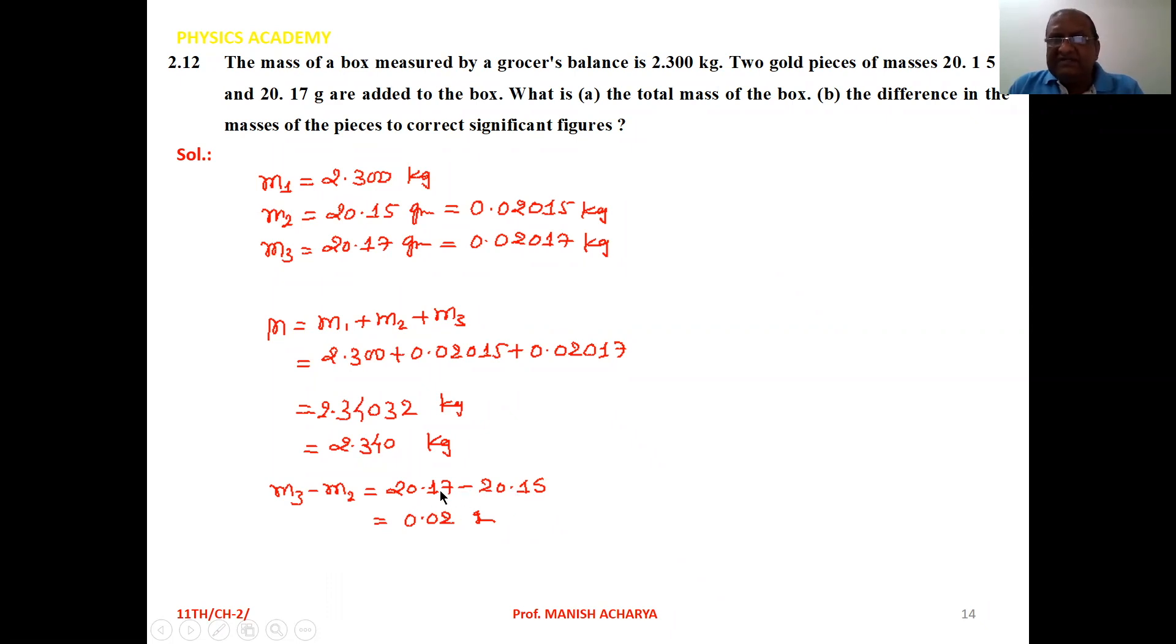Here after the decimal point, two digits are present. So your answer will be up to 2 digits after the decimal point. So 0.02, you can give the answer like this.